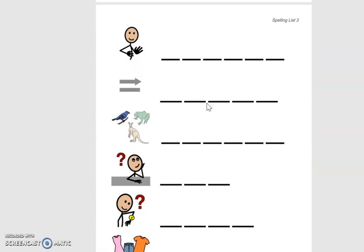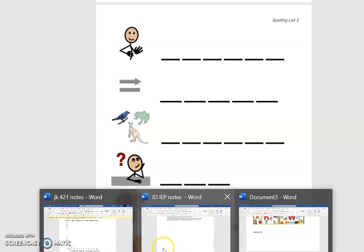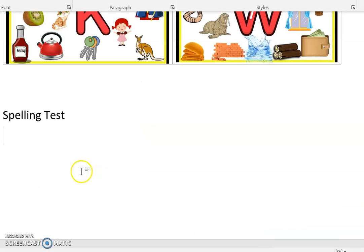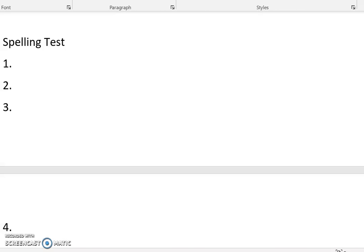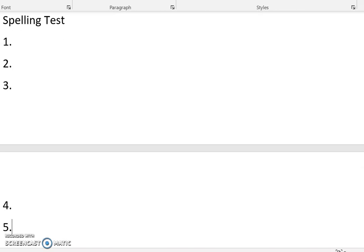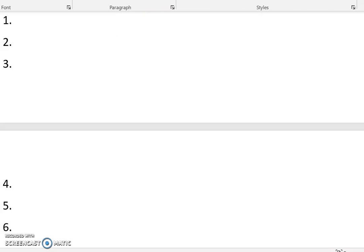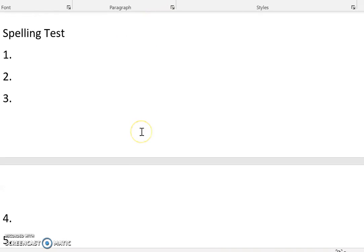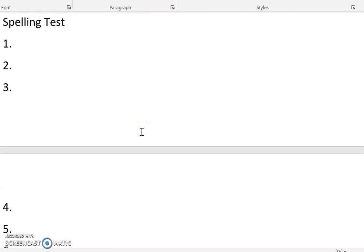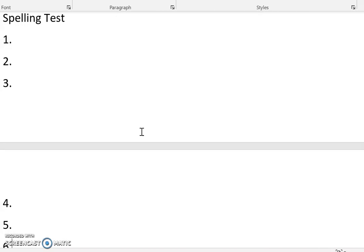If you do not have your packet, that's okay. What I want you to do if you do not have the packet is get out a separate sheet of paper and write spelling test at the top, and then label it 1 to 6. Pause the video if you need to get your materials together, and then come back to me when you're finished.